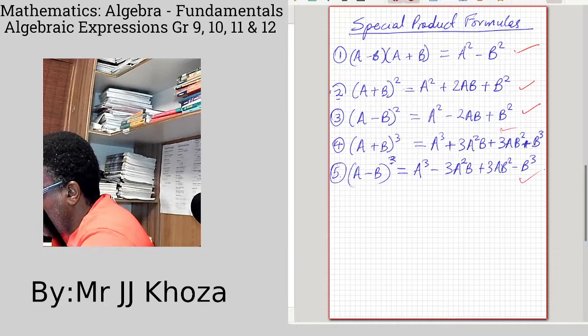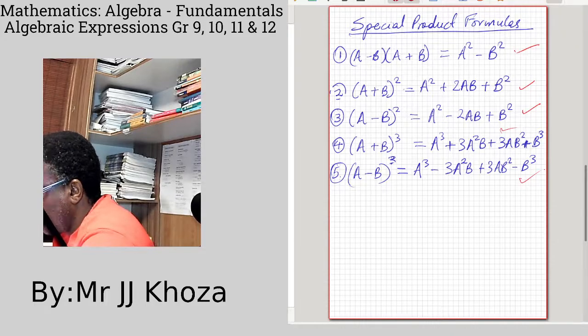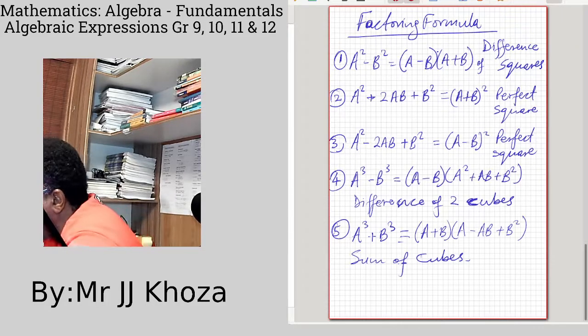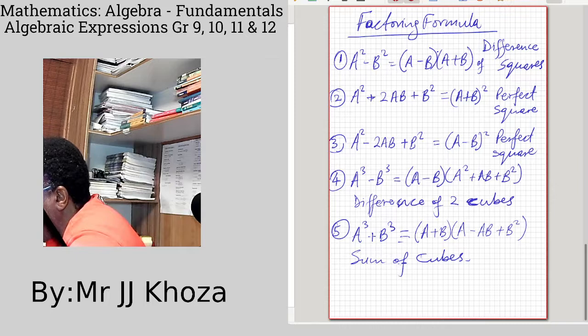This is how you expand product formulas, but your main interest is here. This a squared minus b squared is actually the difference of squares, and this is how you factorize it: a minus b multiplied by a plus b.